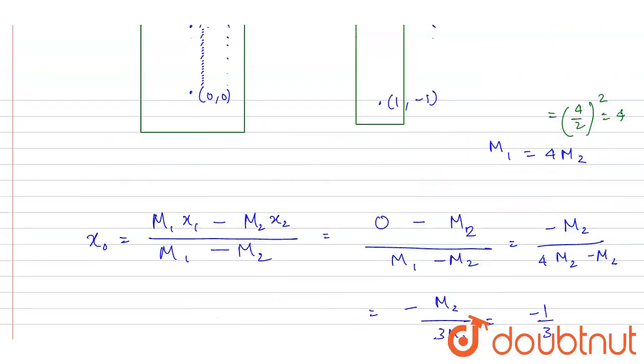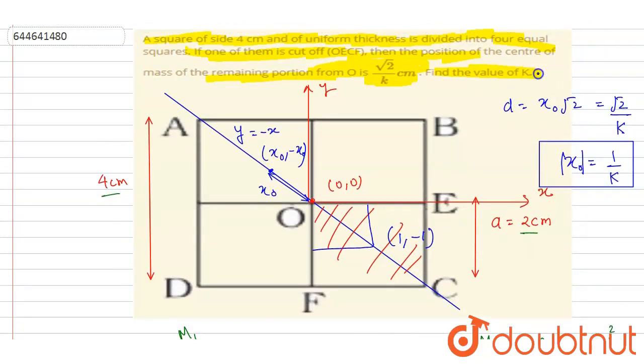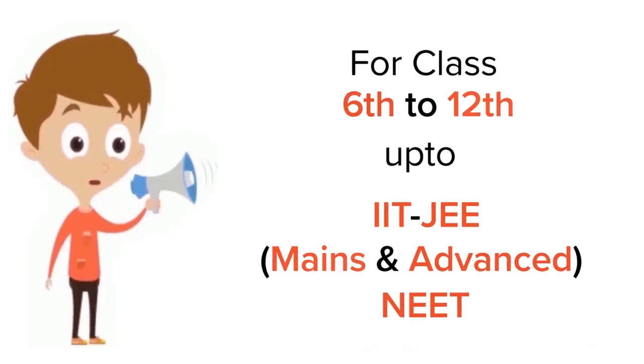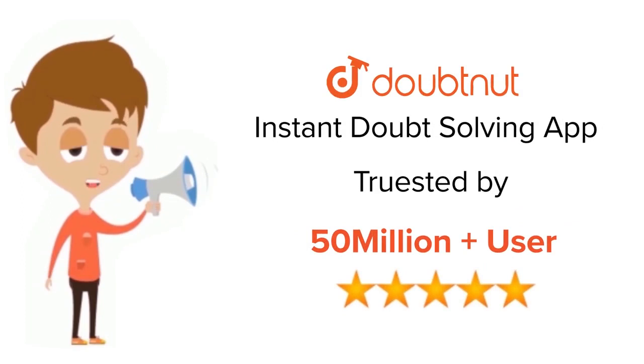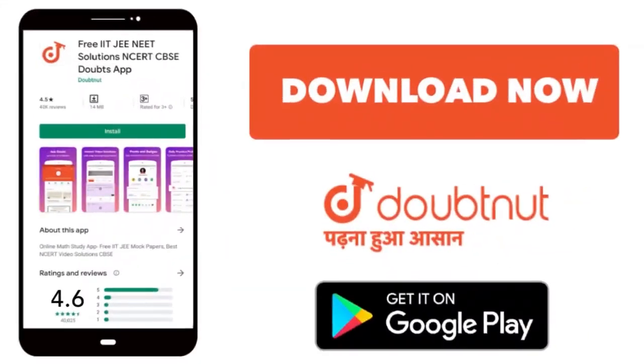Now if you see here, the value of k is 3. Thank you. For class 6-12, IIT-JEE and NEET level, trusted by more than 5 crore students. Download Doubtnut app today.